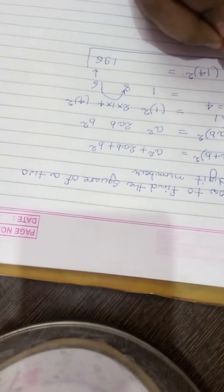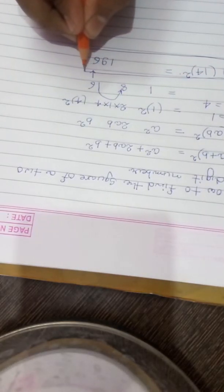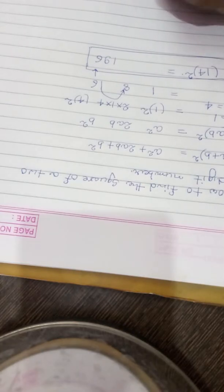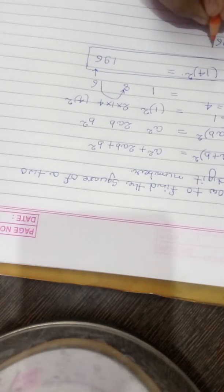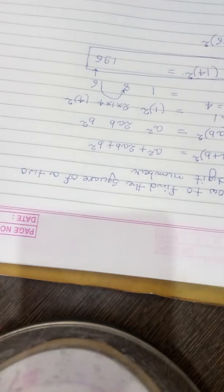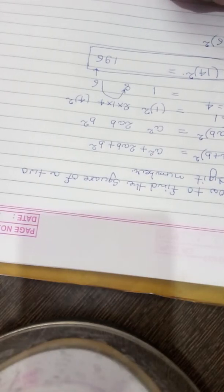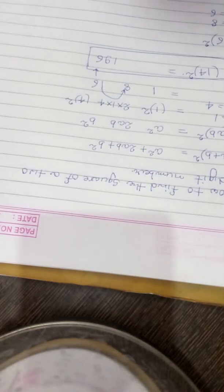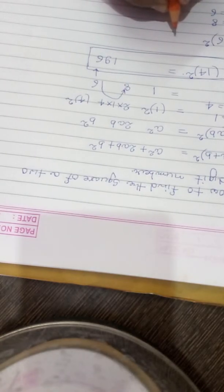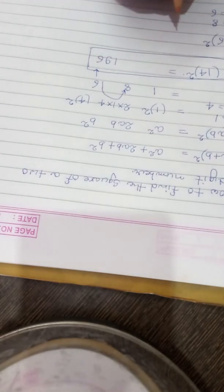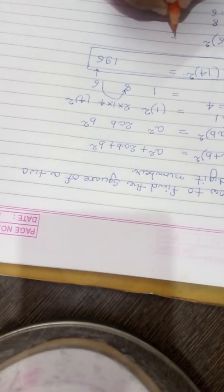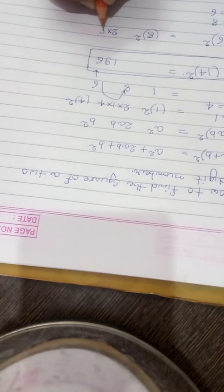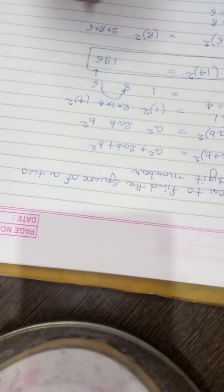So you can apply this formula to any two-digit number. Suppose I will take the example of 86. 86 whole square—what it will be? So here a is 8, b is 6. So again I will apply the same formula. It means this is 8², 2 into 8 into 6, and b² is...